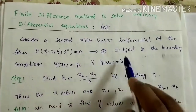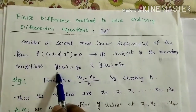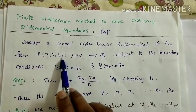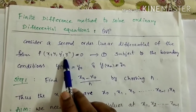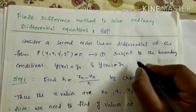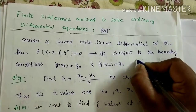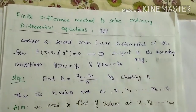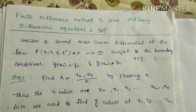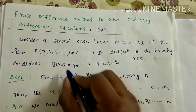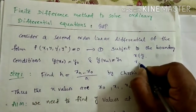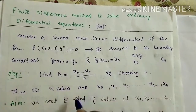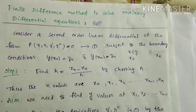This equation is subjected to the boundary conditions y(x₀) = y₀ and y(xₙ) = yₙ. We are not going to solve this equation using any analytical methods — that means we are not going to get any relation between x and y. Instead, we are going to find y values between the starting and ending points x₀ and xₙ.